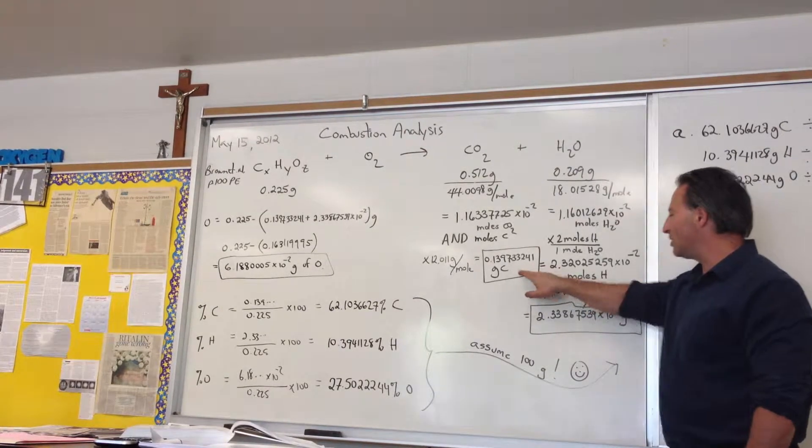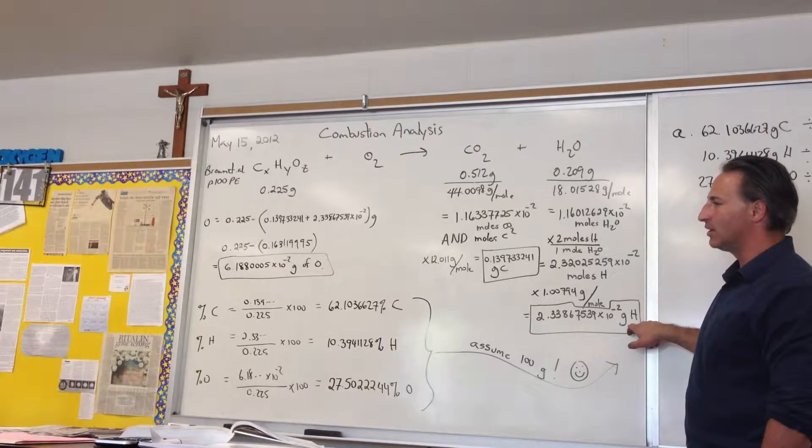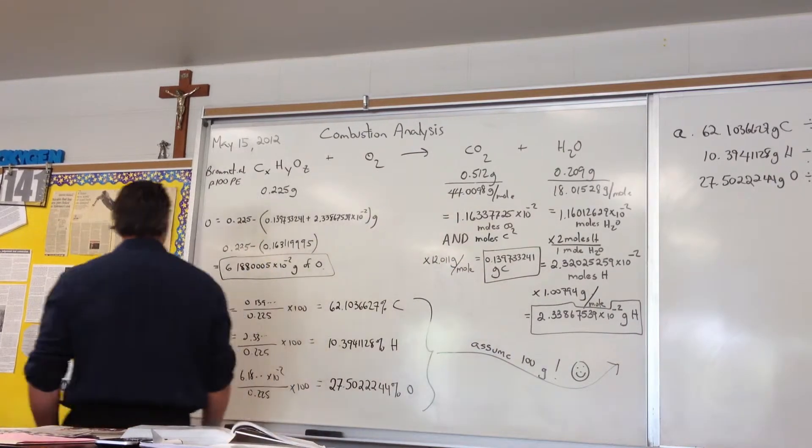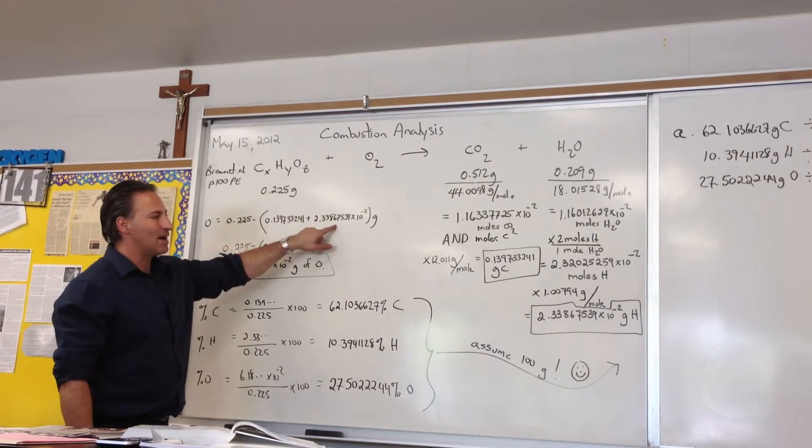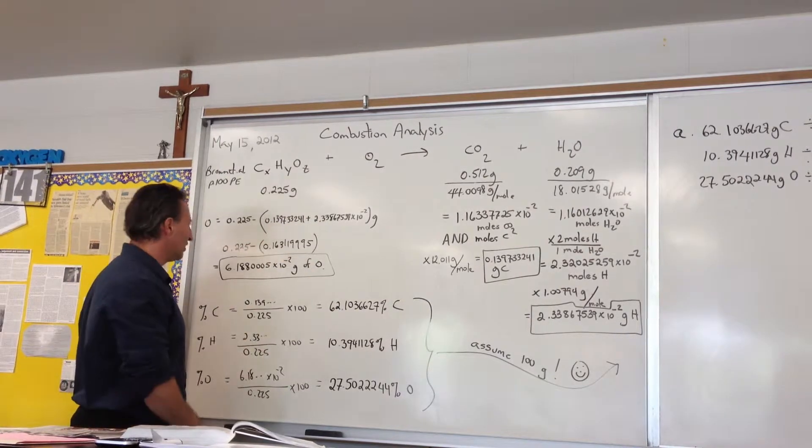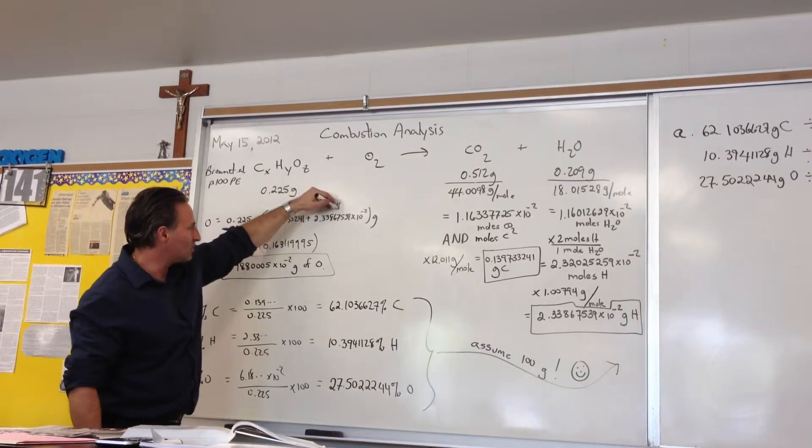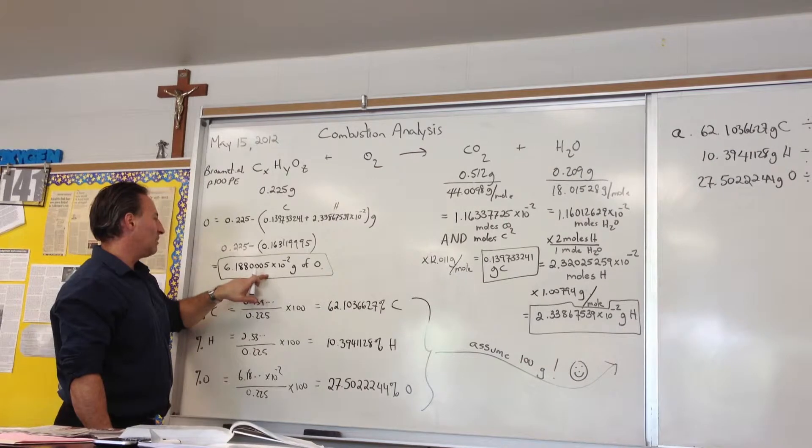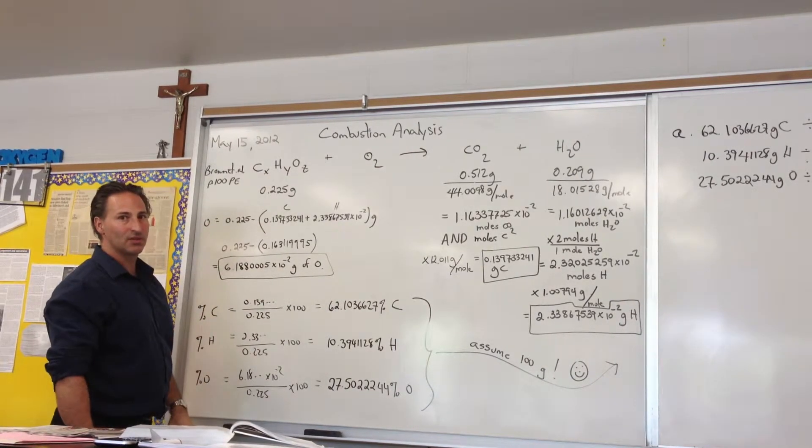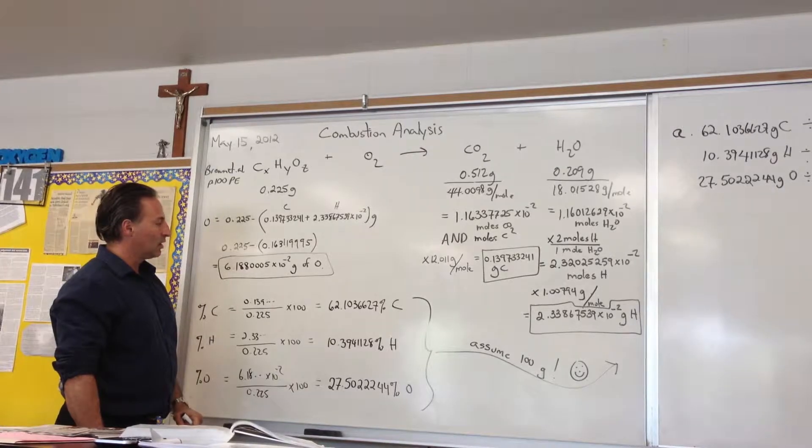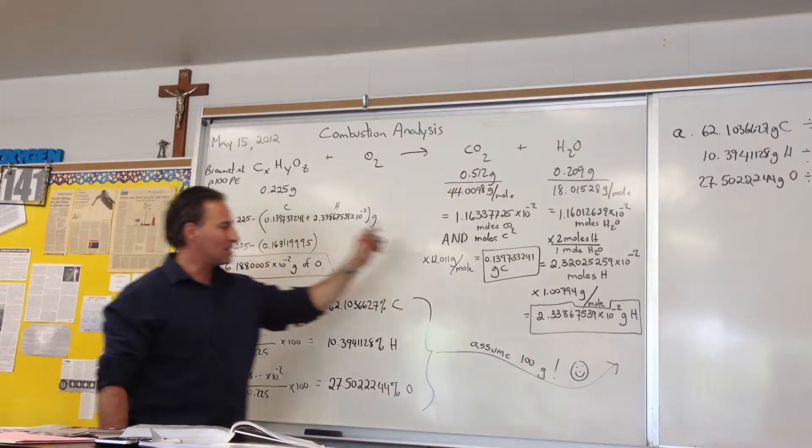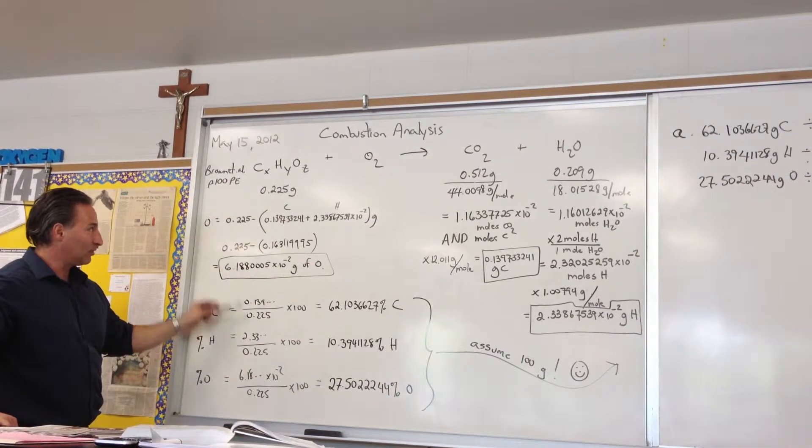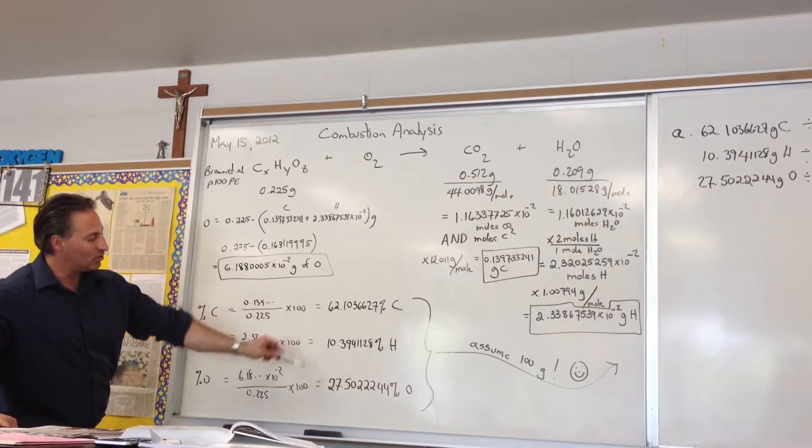We now know the grams of carbon and hydrogen in the compound, but it also contains oxygen. To find the oxygen mass, we subtract the carbon and hydrogen masses from 0.225 grams. The result is the mass of oxygen in the original compound. Once we have all three masses, we divide each by the total molar mass, multiply by 100, and convert to percentages.